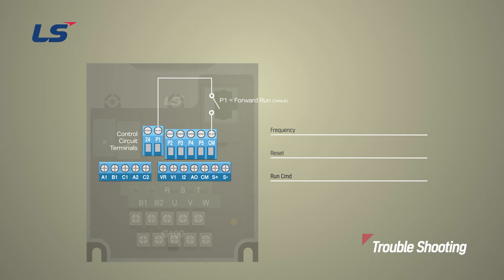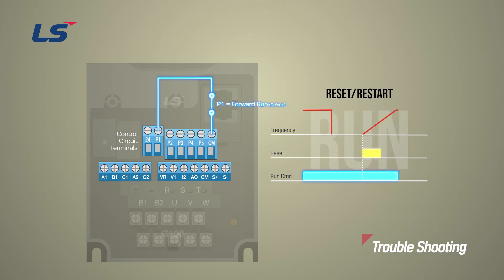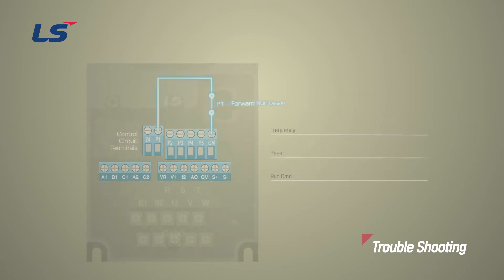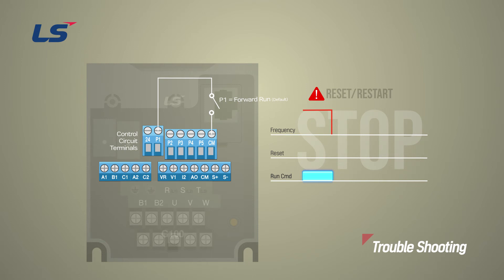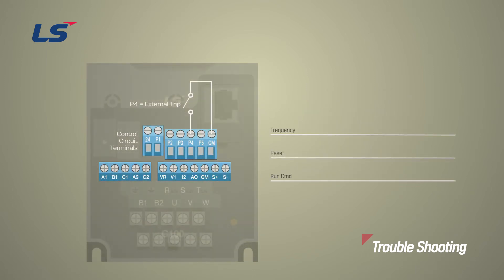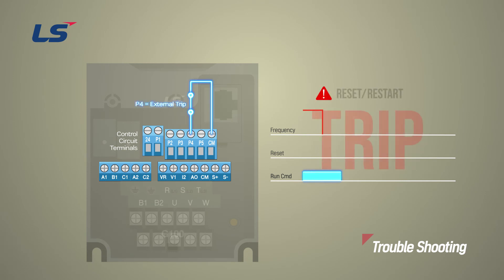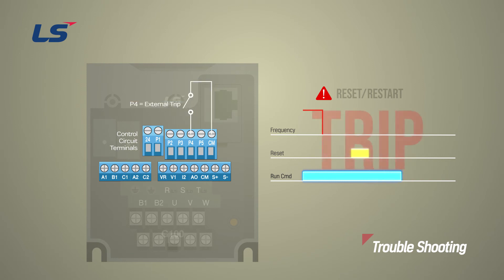The following is a list of things to check when the automatic restart function does not work properly. First, the Reset-Restart function operates only when the command source of the terminal block is on. If the terminal block command source is turned off, the function does not work, so be sure to check if the command source is on. Also, if the P4 terminal set as external trip is on, the trip status continues and restart is not possible. Therefore, it must be opened after generating an external trip.